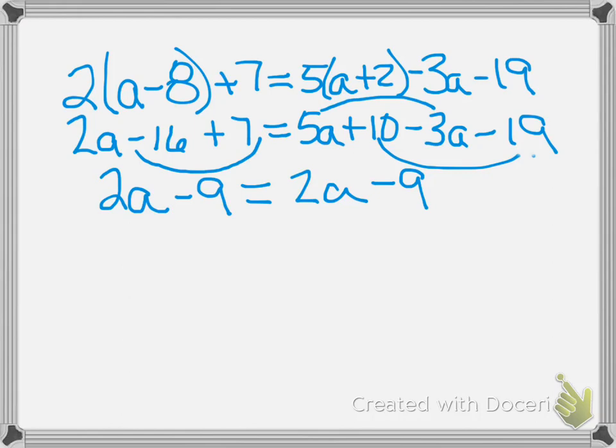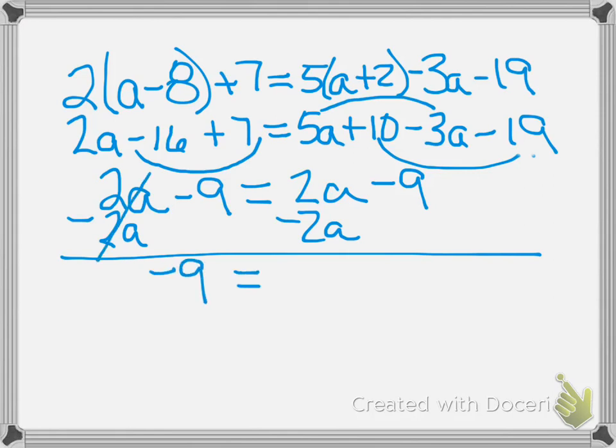I need to bring the variables together on one side, and both sides have a 2A again, so I've got to subtract 2A. 2A minus 2A is gone, leaving me with negative 9 on the left. 2A minus 2A is gone, leaving me with negative 9 on the right. Variables fall out, but this time negative 9 equals negative 9. True or false? It's true.